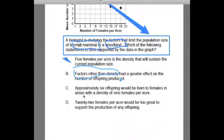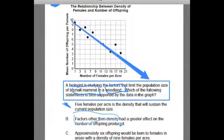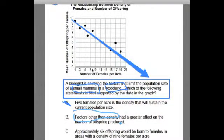What about C? Approximately six offspring would be born to females in areas with a density of nine females per acre. Let's see. Six offspring, if there's approximately six offspring when there's nine females per acre. So I go here. Nine females. Nine females. Guess what? That looks pretty good. At nine females, we have six offspring.